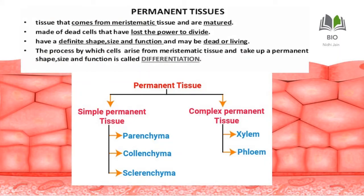Permanent tissue comes from meristematic tissue but has now lost the power to divide. These tissues have a definite shape, size, and function and may be dead or living. The process by which cells arise from meristematic tissue and take up a permanent shape, size, and function is called differentiation. As mentioned, permanent tissue is of two kinds: simple and complex. Simple includes parenchyma, collenchyma, and sclerenchyma; complex includes xylem and phloem.